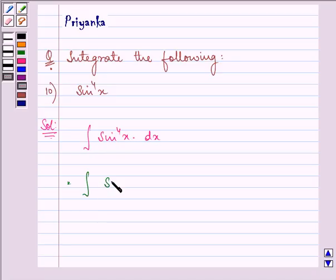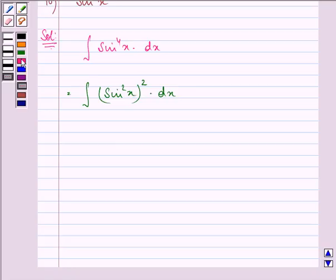Now we can write it as sin squared x whole raised to the power 2 into dx. And sin squared x can be written as 1 minus cos 2x by 2 whole raised to the power 2 into dx.